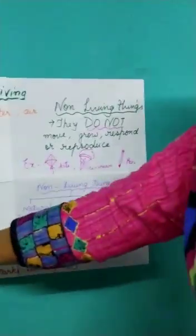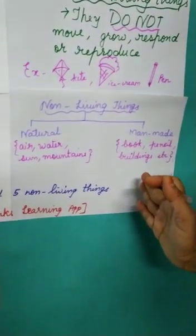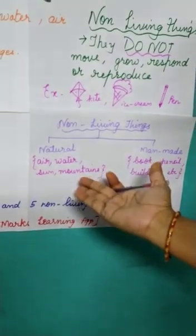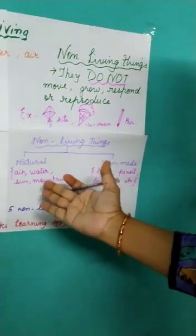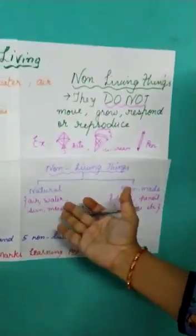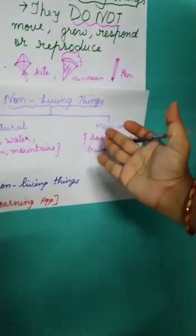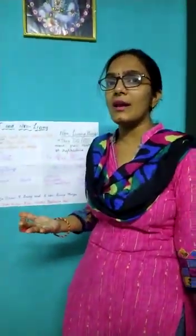Living things are people, animals, and plants. And what about the non-living things? They can be natural or they can be man-made. Natural non-living things are air, water, sun, and mountains — they all cannot breathe, they all cannot grow, that is why they are non-living things. And man-made things like your book, pen, building, clothes, your house, your door, window — everything is non-living, isn't it?